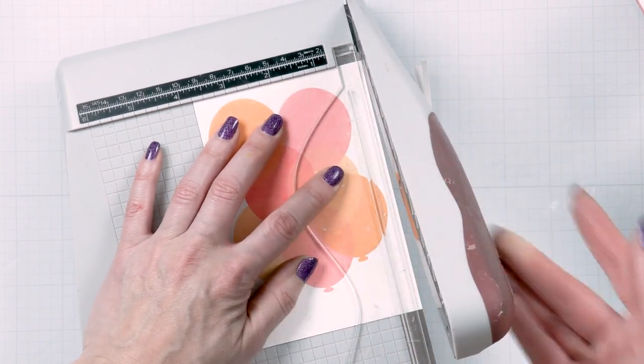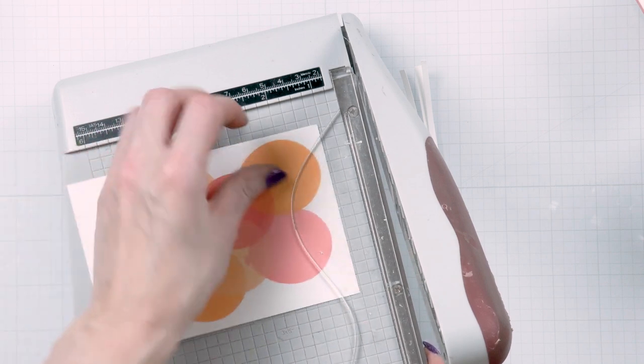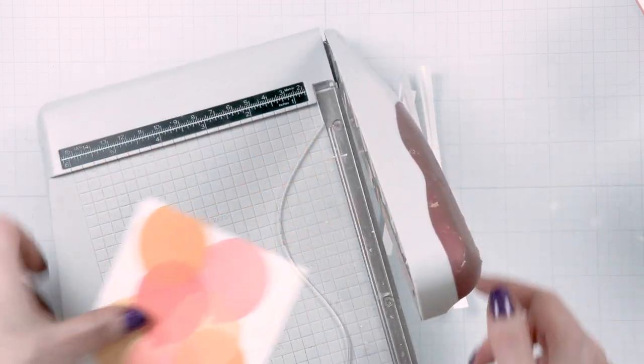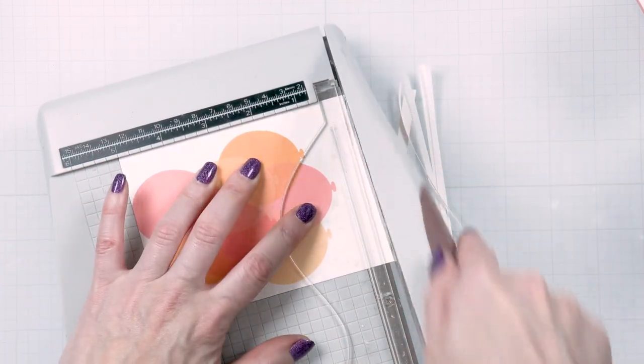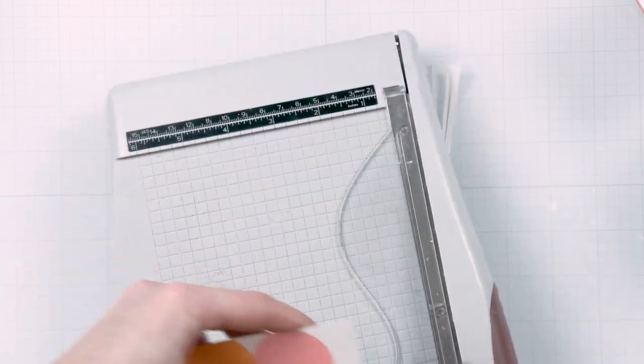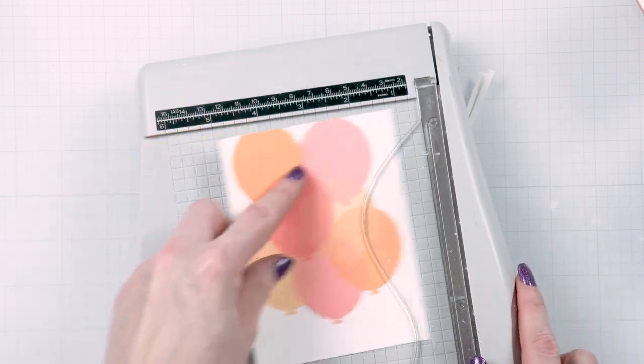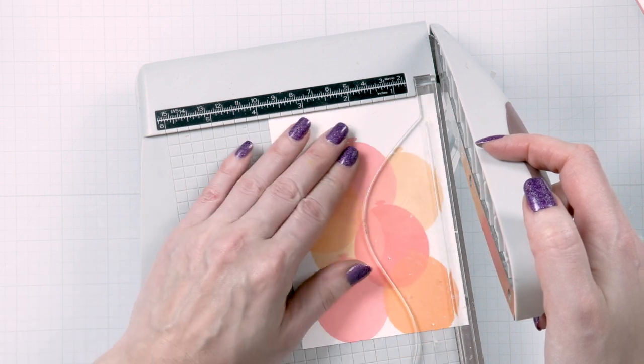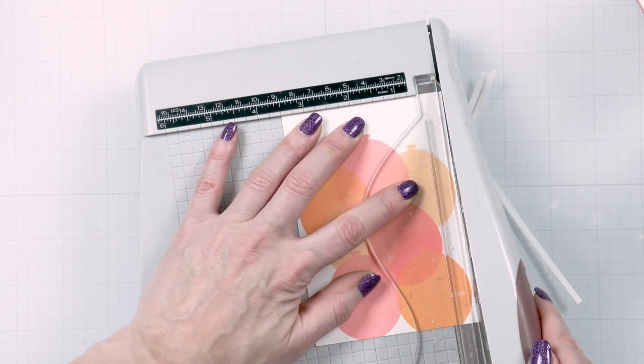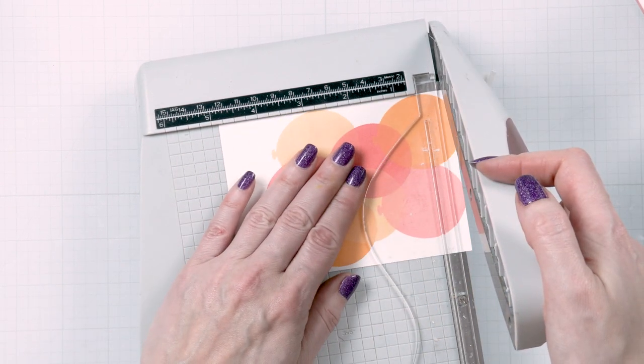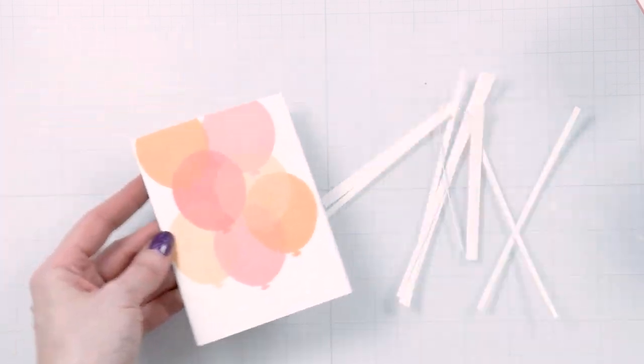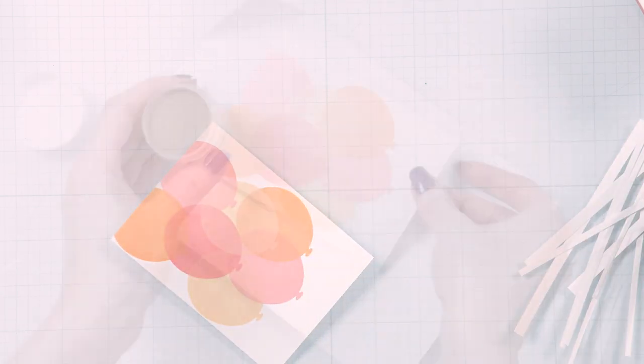Next I trimmed my panels to either three and three quarter inches by five inches or three and a half inches by four and three quarter inches. Now I wanted the balloons to go outside the edge of my panels. So the size of the panels depended on the balloon placement. If the balloons were spread out, I only cut the panel to three and three quarter by five inches, but if the balloons were clustered tightly in the center, I had to trim the panel down a little bit more.